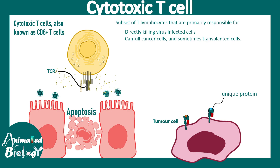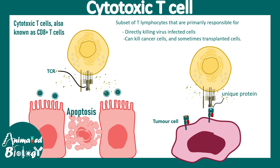This same approach applies to cancer cells. Any normal nucleated cell displays self-peptides on class I MHC as a signal that everything is fine. However, in a tumor cell, a unique protein not normally present is displayed on the surface — these are tumor antigens. CD8 positive T cells recognize these and secrete granules with enzymes to kill the tumor cells.